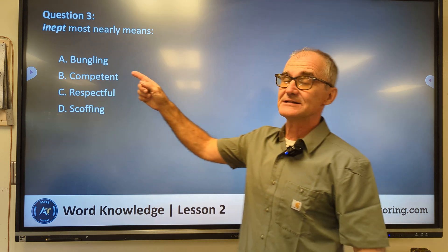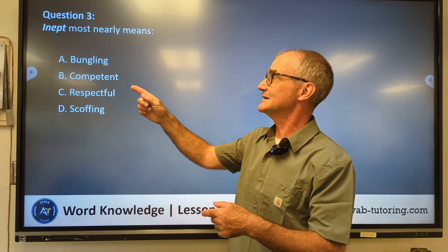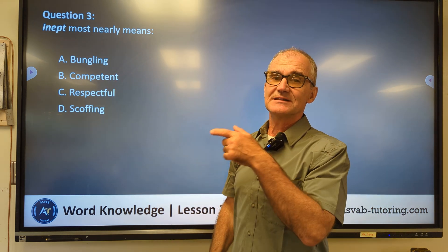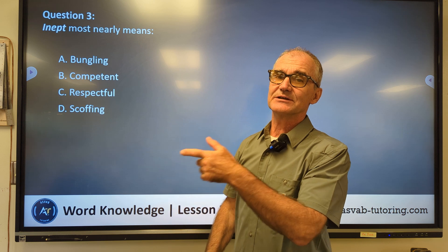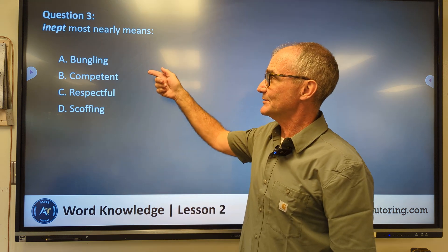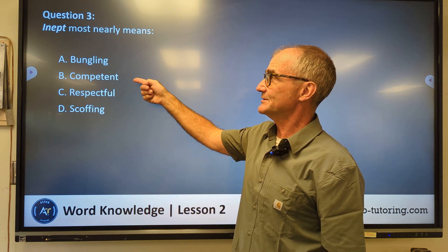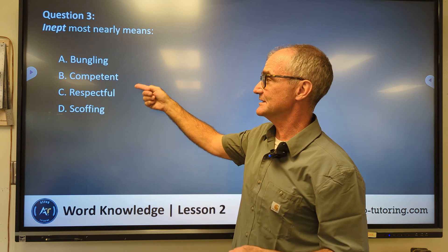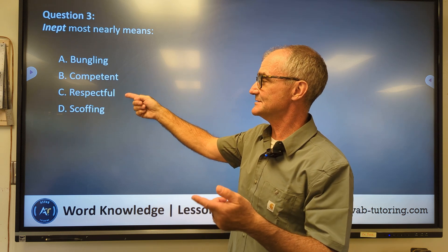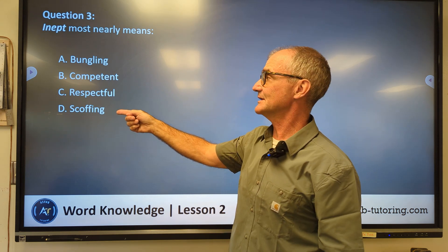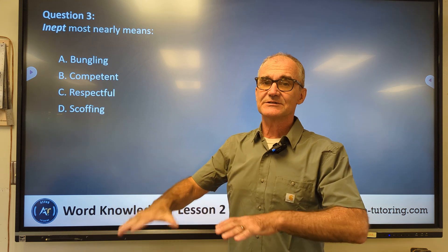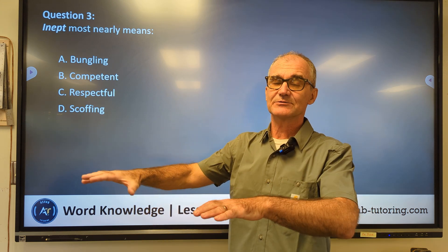Inept, in is a prefix, it means the opposite. Inept means that you are not very capable, not very good at something. So I read through my answers, bungling, competent, competent is the opposite, respectful, kind of the opposite, scoffing, kind of unrelated. Bungling means you don't know what you're doing, you're just bungling your way through it. Bungling and inept mean the exact same thing.